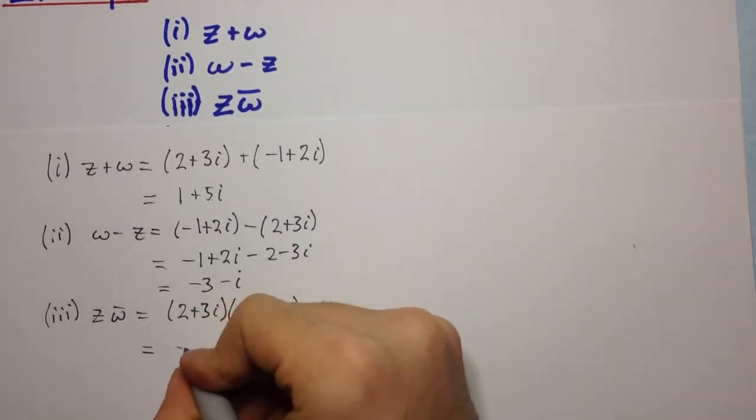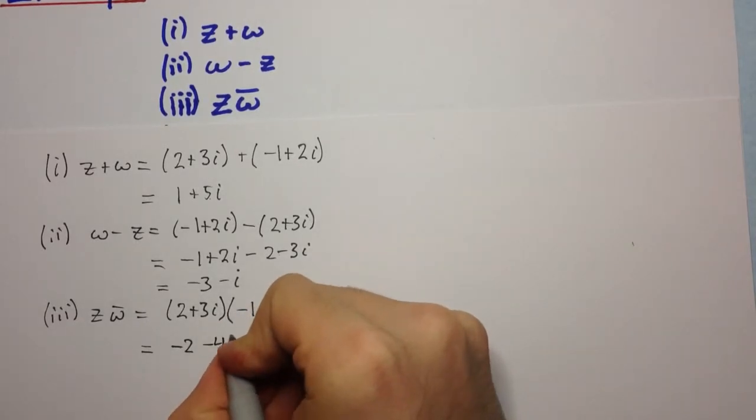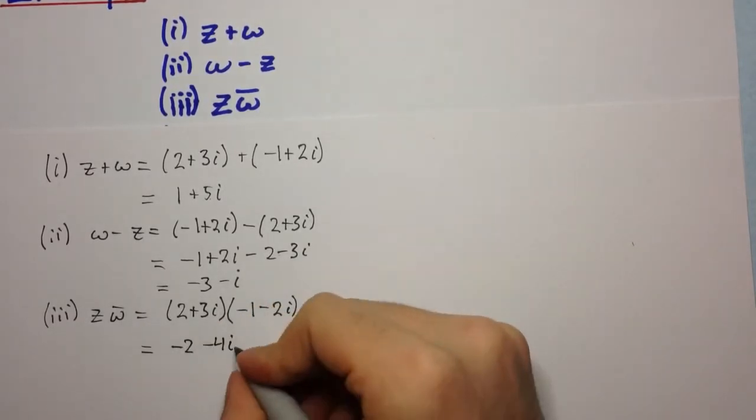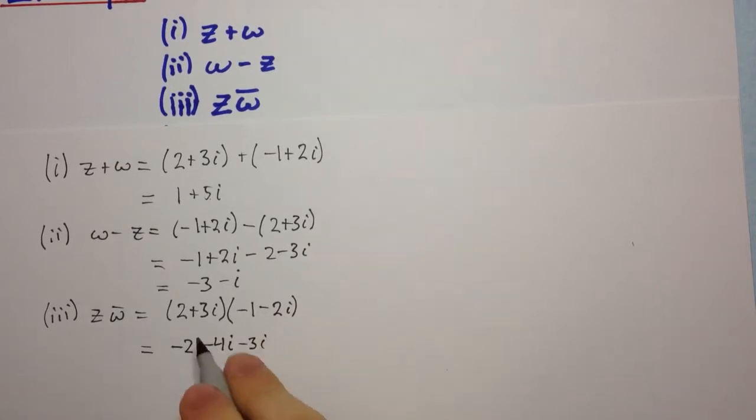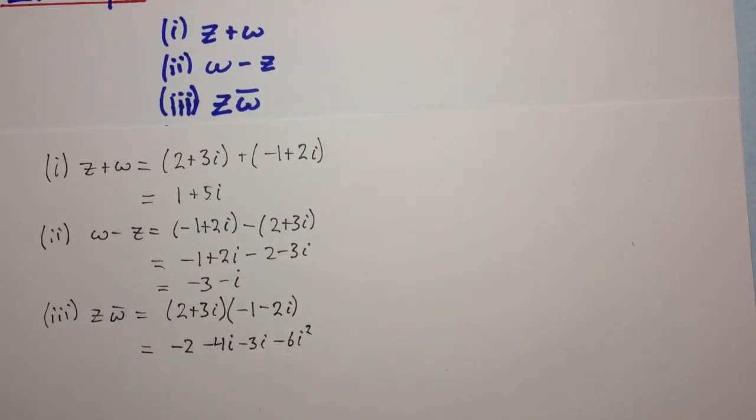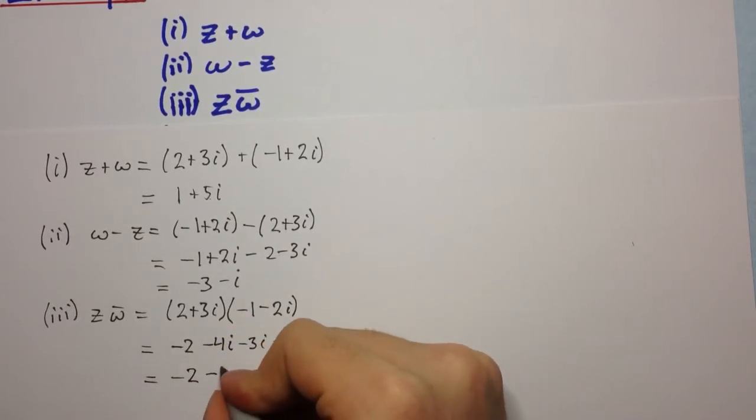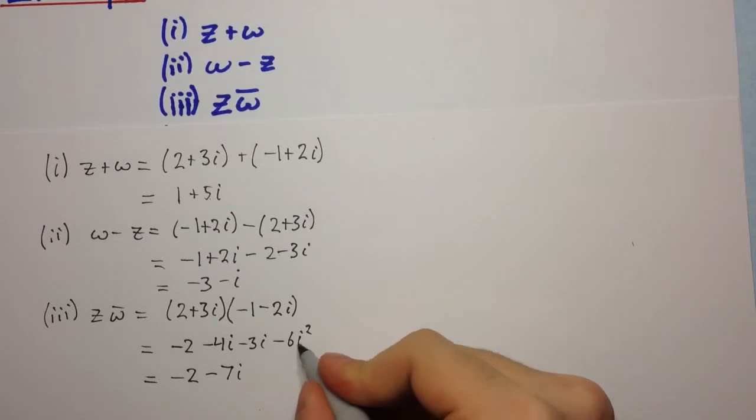2 times minus 1 is minus 2. 2 times minus 2i is minus 4i. 3i times minus 1 is minus 3i. And 3i times minus 2i is negative 6i squared. Now we can simplify a little bit.